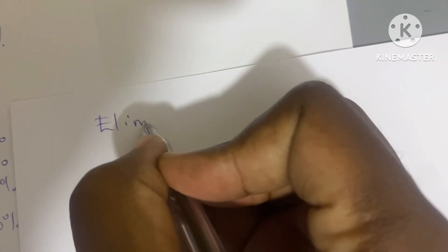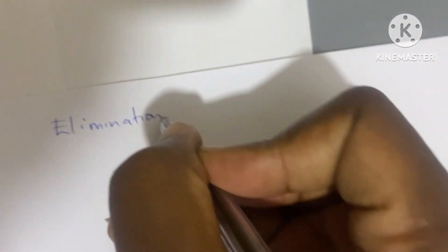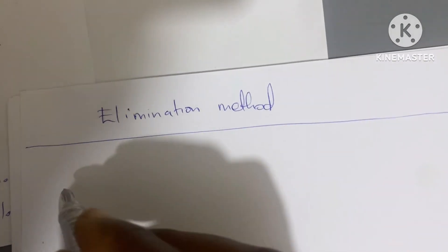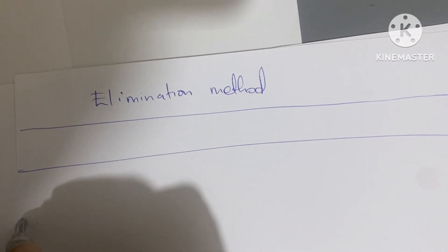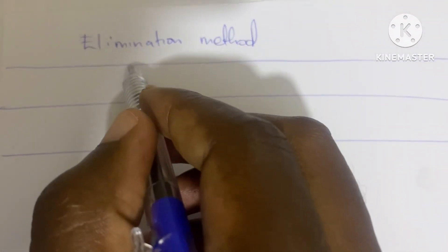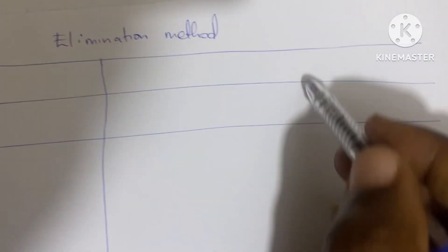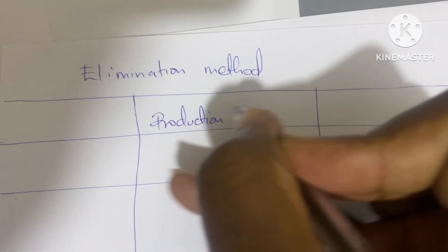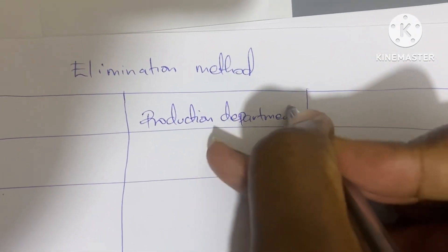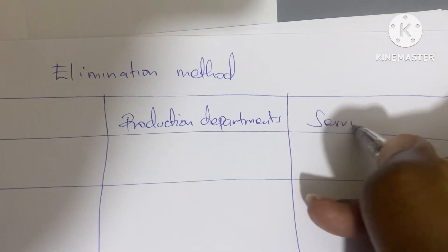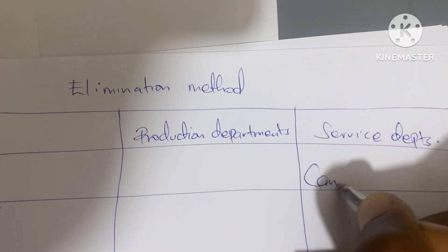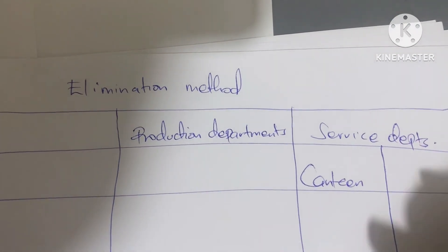In this video we are going to look at the secondary distribution using the elimination method. We draw a table with production departments and service departments. The service departments we have are canteen and maintenance.